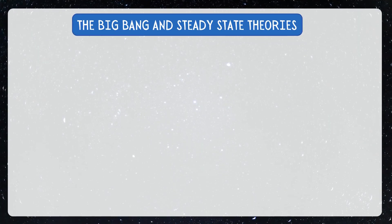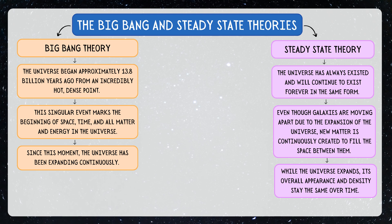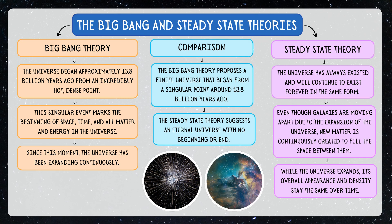In today's lesson, we delved into two key theories explaining the universe's origins and expansion: the Big Bang Theory and the steady-state theory. We first covered the Big Bang Theory, which posits that the universe began around 13.8 billion years ago from a tiny, hot, dense point and has been expanding ever since. Next, we examined the steady-state theory, which emerged in the 1940s as an alternative model suggesting the universe has no beginning or end and remains in a constant state, with new matter continuously created to maintain its density as it expands. Finally, we compared both theories, noting that the Big Bang Theory emphasises a dynamic universe with a clear origin point, while the steady-state theory proposes an eternal, unchanging universe. This lesson enhances our understanding of the different perspectives on the universe's history and structure.